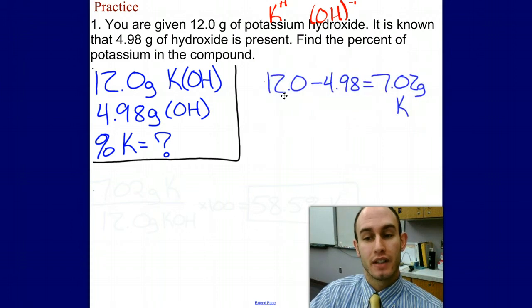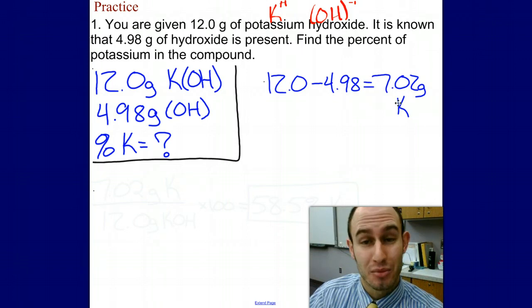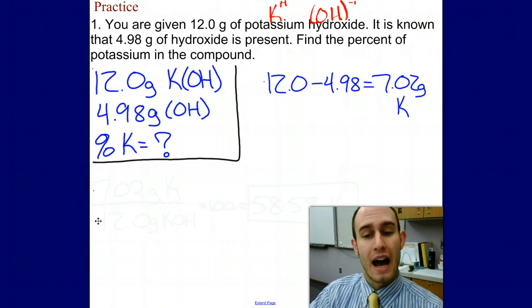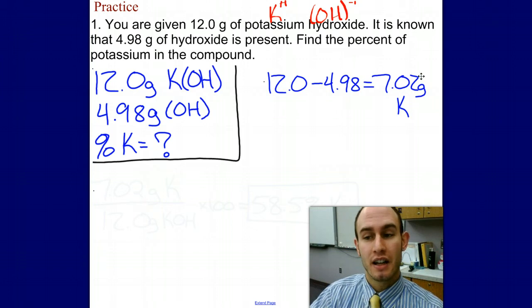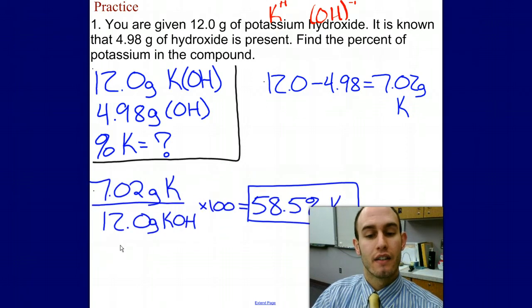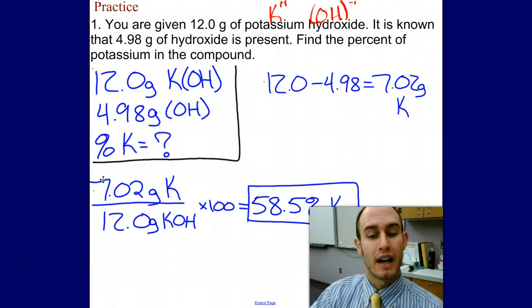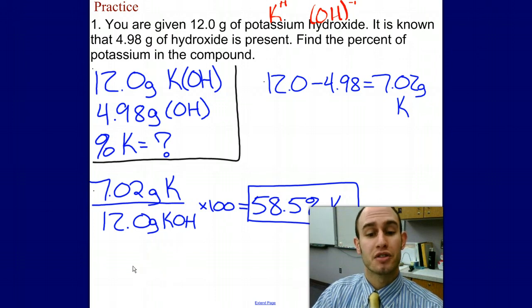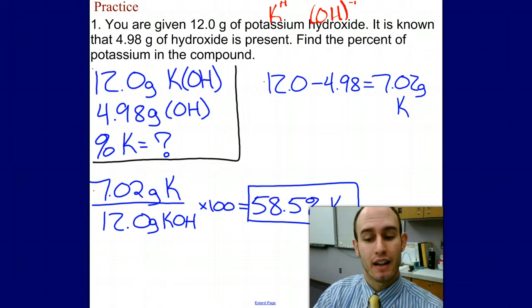I've taken the mass of the compound minus the mass of the hydroxide, and I'm left with 7.02 grams of potassium. Now I just use percent composition. The mass of my element on top divided by the mass of the whole compound on the bottom, multiplied by 100, gives me 58.5% mass of K in the compound.